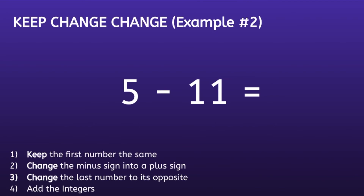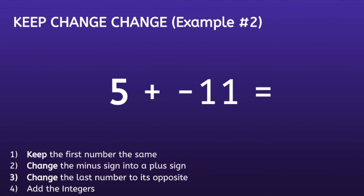Moving on to example number two: five minus eleven. Step one is to keep the first number the same. Step two is to change the minus sign into a plus sign. Step three is to change the last number to its opposite — the opposite of positive eleven is negative eleven.